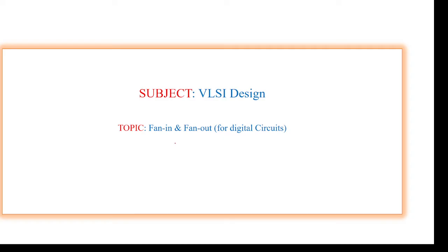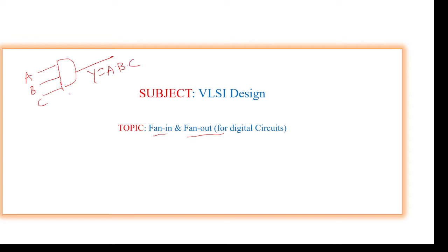I am going to explain about fan-in and fan-out for a digital circuit. Fan-in means the number of inputs for a gate. For example, if we take an AND gate having three inputs A, B, and C, the output is A dot B dot C. So the fan-in for this circuit is three, therefore fan-in equals three.